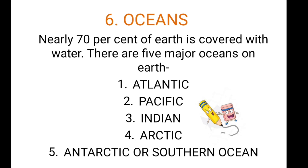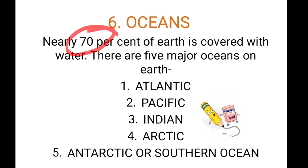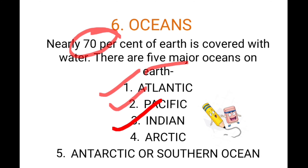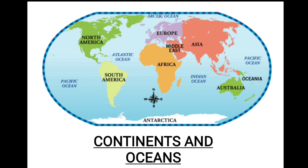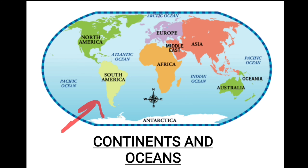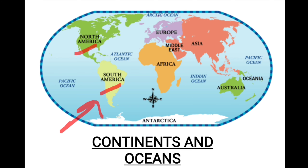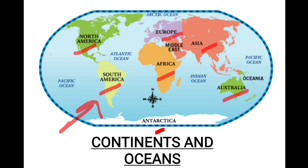World oceans: nearly 70 percent of the Earth is covered by water. There are five major oceans on the Earth. They are the Atlantic, Pacific, Indian, Arctic, and Antarctic or Southern Ocean. Look at this picture — here you can see the blue part is the ocean: Pacific Ocean, Atlantic Ocean, Indian Ocean, and Arctic Ocean. The continents are North America, South America, Africa, Asia, Europe, Australia, and Antarctica.